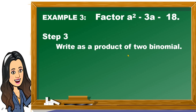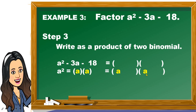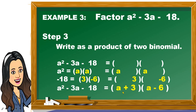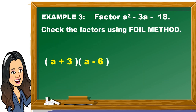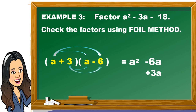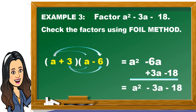Step 3: write as a product of two binomials. The first terms are a and a, and the last terms are 3 and negative 6. Therefore, a squared minus 3a minus 18 equals the quantity a plus 3 times the quantity a minus 6, or the quantity a minus 6 times the quantity a plus 3. Let us check using the FOIL method: a times a is a squared, a times negative 6 is negative 6a, 3 times a is 3a, and 3 times negative 6 is negative 18. Combining gives a squared minus 3a minus 18. The correct factors are a plus 3 and a minus 6.